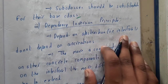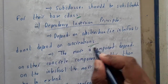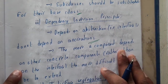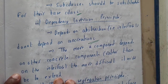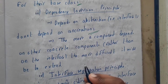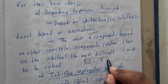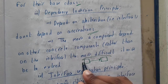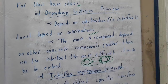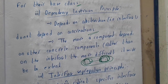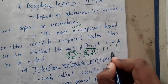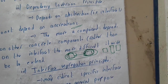The Dependency Inversion Principle says: depend on abstraction — that is, the interface — do not depend on concretions. The more a component depends on another component rather than on the interface, the more difficult it will be to extend. If a component directly depends on another component, modifications in one will affect the other. That is why in components we use an interface in between — you can think of the interface as a broker.